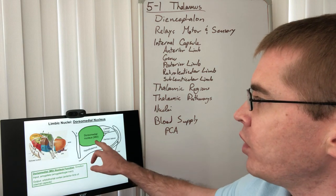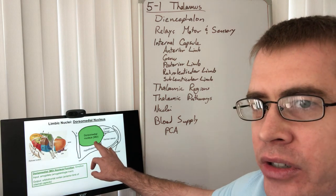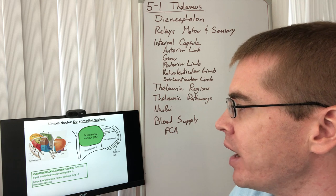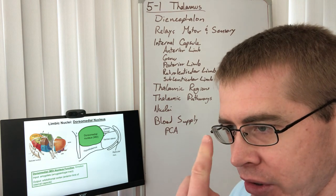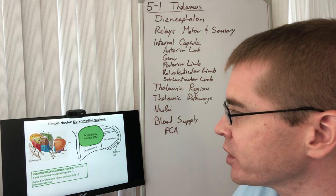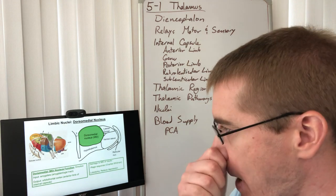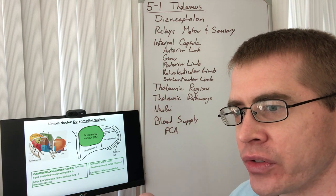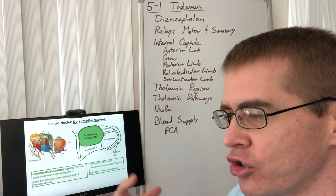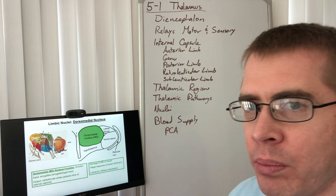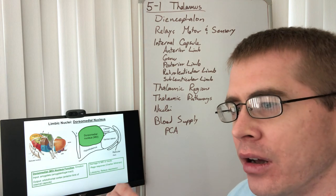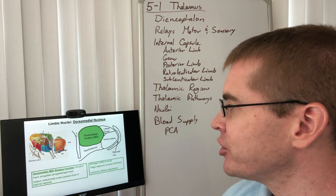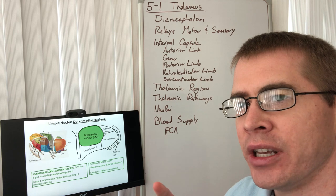Moving a bit farther back, the dorsomedial nucleus — the MD nucleus — receives input from the amygdala and outputs to the inferior portion of the frontal cortex, the orbitofrontal cortex. This is related to emotional regulation, our conscious regulation of emotions, and our ability not to be controlled by the fear response or whatever emotions are being stimulated by the amygdala. Damage to this region results in a rage response.